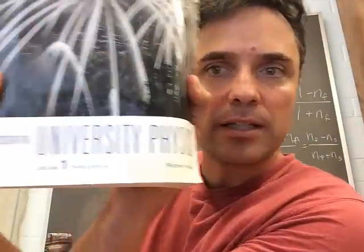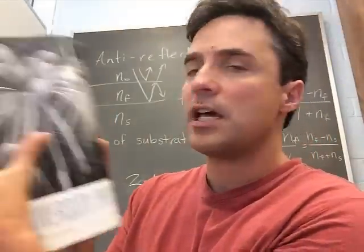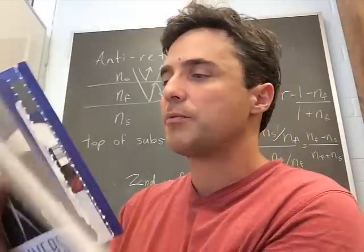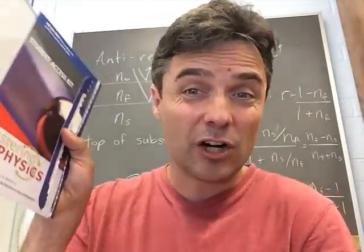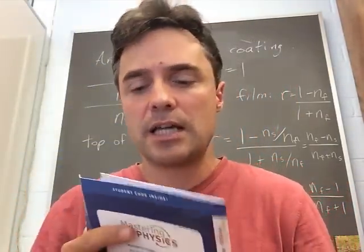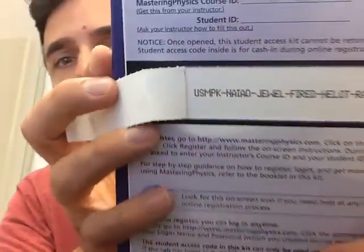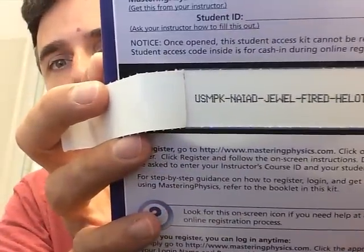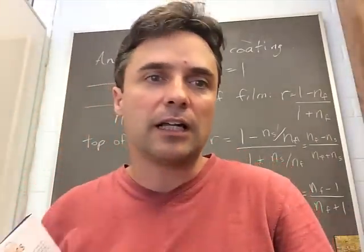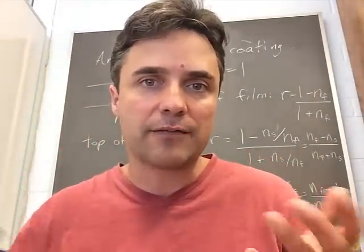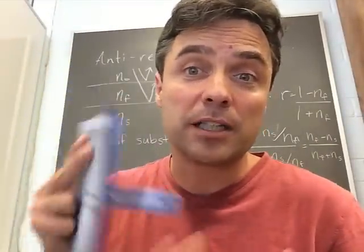For example, if you went and bought Wolfson Essential University Physics and it was shrink-wrapped, when you took off the shrink wrap you should have found a little card inside. It says Pearson — when you open it up you view the access code, peel it back, and you get a whole big string of letters that you have to type in. That's worth fifty dollars.